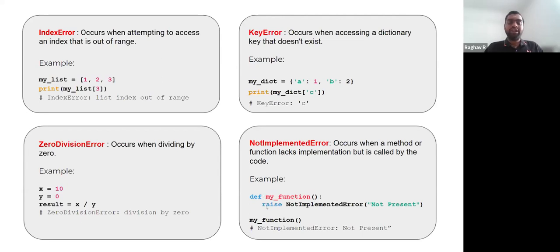This is one of the most common errors students will receive in this course, because when we give out the starter code for homeworks, we provide just a function definition line followed by 'raise NotImplementedError'. So if you do not implement that function and do not write your own code for it, you would get this error.